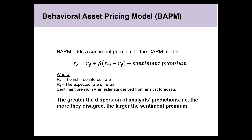The behavioral asset pricing model modifies CAPM by adding a sentiment premium to expected returns. That sentiment premium is derived from a variety of analyst forecasts. Know the equation and know that the more analysts disagree — the greater the dispersion of their predictions — the larger the sentiment premium and the higher the expected return. That's fairly straightforward: know the equation and know that fact.